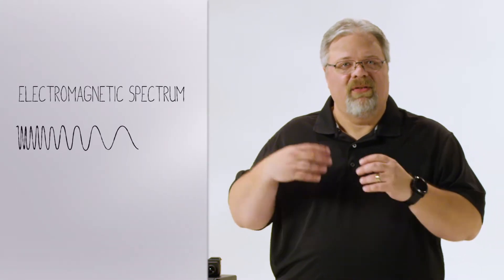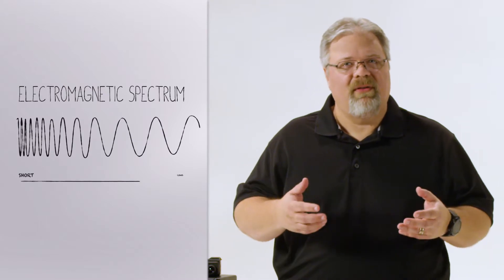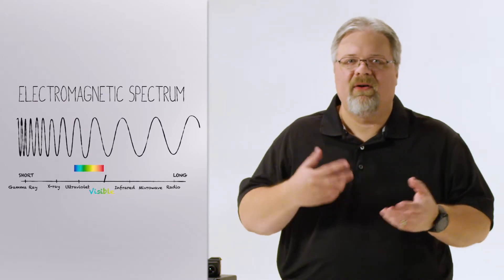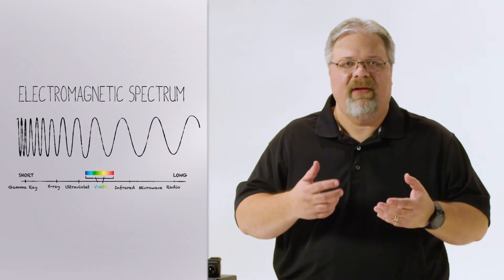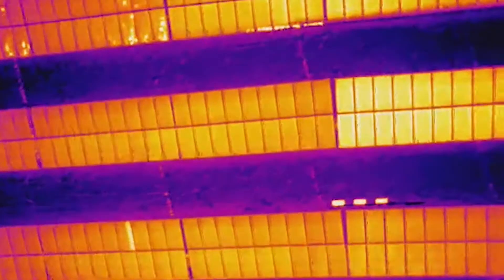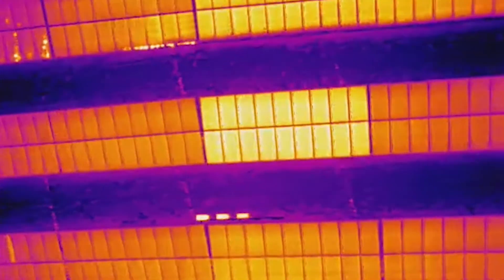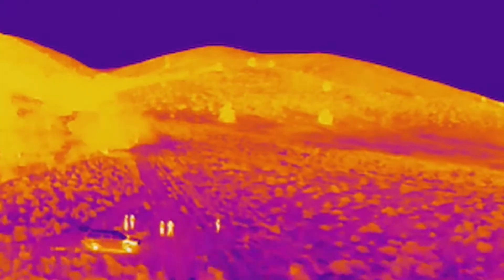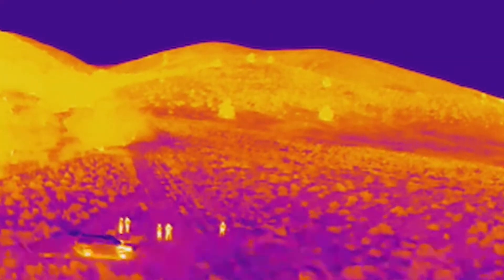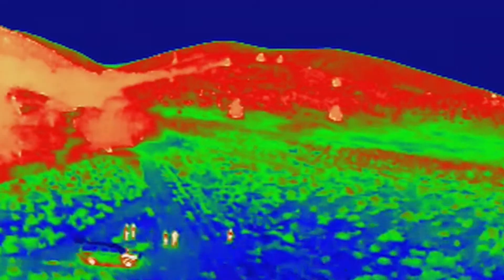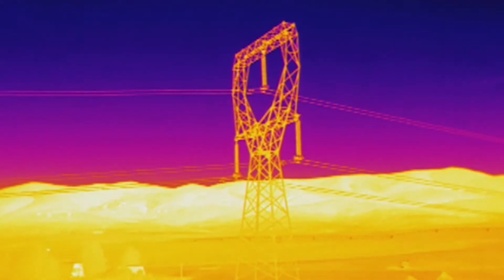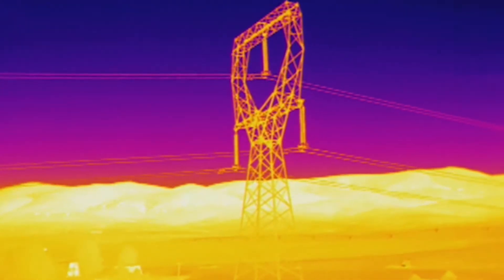If you remember back to our thermal 101 video, we talked about how infrared or thermal energy is part of the electromagnetic spectrum. It's invisible energy that is around us all the time, but we can't see it because our eyes aren't sensitive to those wavelengths of energy. Since we can't see it, thermal cameras need to apply what's called false color in order to make pictures of the energy that we can understand. Different colors or shades of gray are assigned to different intensities of infrared radiation, and those in turn make the videos and images we work with.